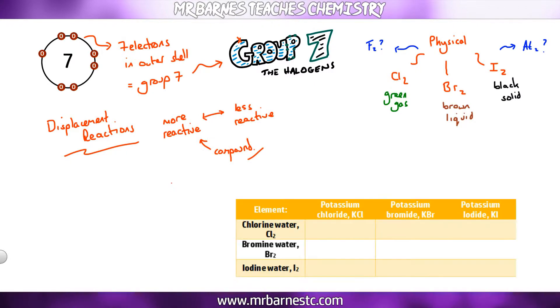So I've got a table in the bottom right hand corner where I've got chlorine water which is colourless, bromine water which is orange and iodine water which is brown. And I'm going to react them with potassium chloride, potassium bromide and potassium iodide which are all colourless.